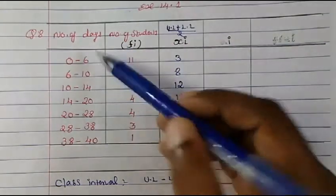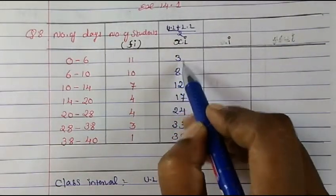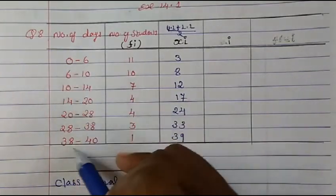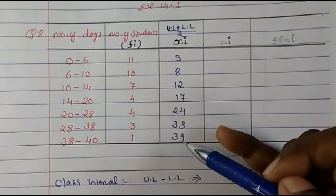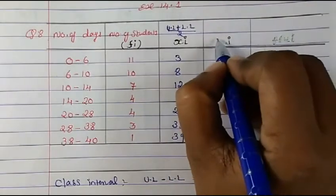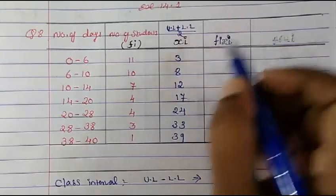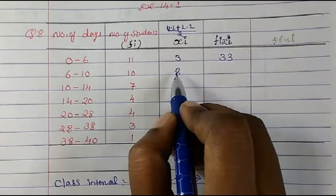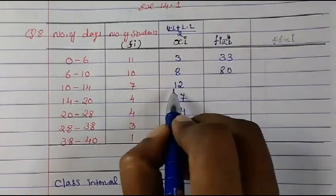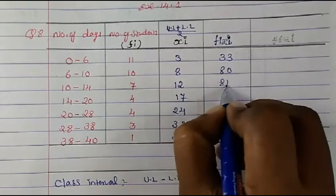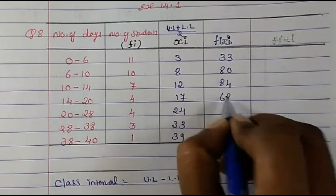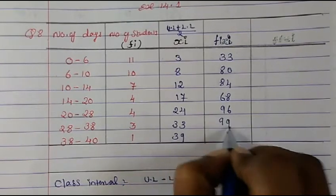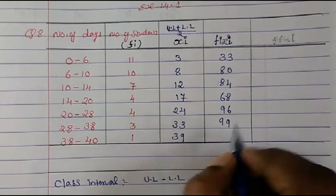When class intervals are the same you can just keep adding, but here they differ so we calculate each xi individually. Now for the direct method we find fi × xi: 11 × 3 = 33, 10 × 8 = 80, 7 × 12 = 84, 4 × 17 = 68, 4 × 24 = 96, 3 × 33 = 99, 1 × 39 = 39.